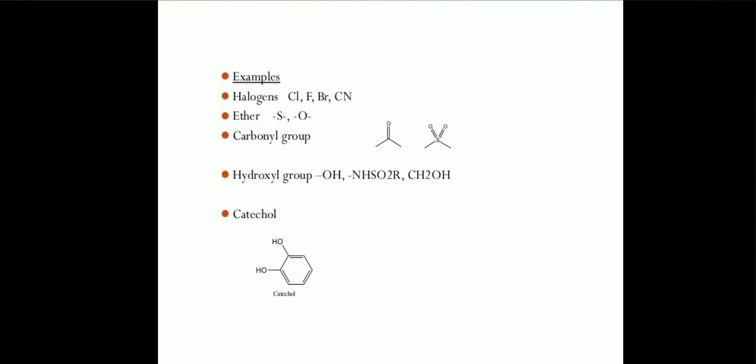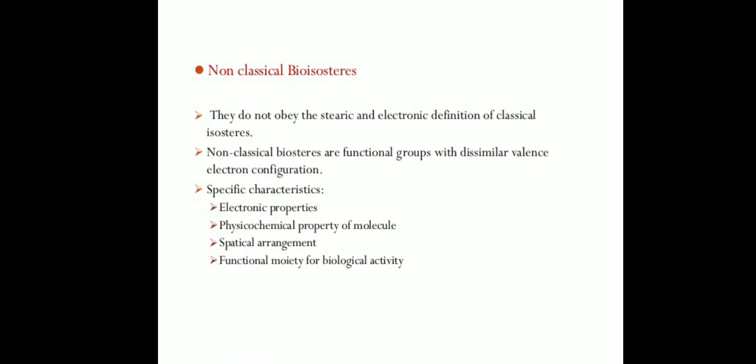Next we have non-classical bioisosteres. They do not obey the steric and electronic definition of classical isosteres. Non-classical bioisosteres are functional groups with dissimilar valence electronic configurations but with specific characteristics such as electronic properties, physicochemical properties of the molecule, spatial arrangement, and functional moiety for biological activity.